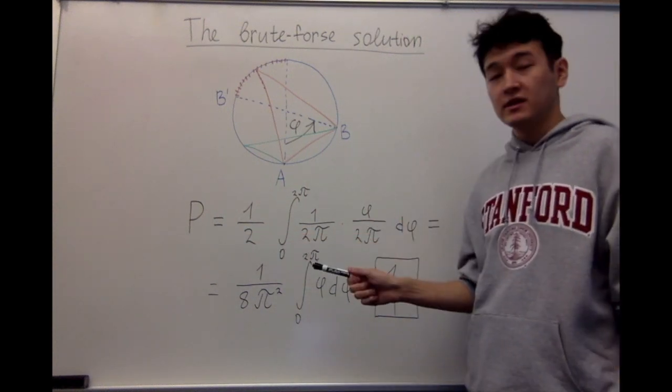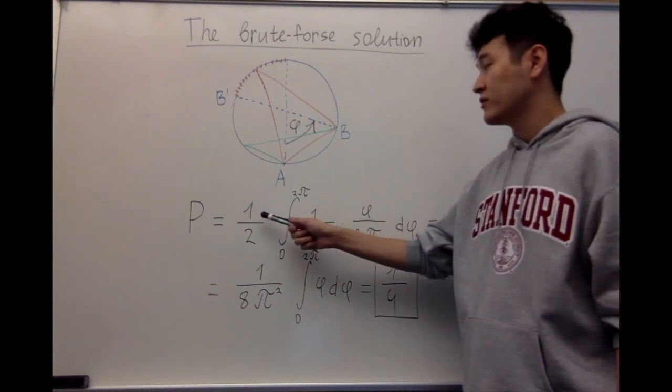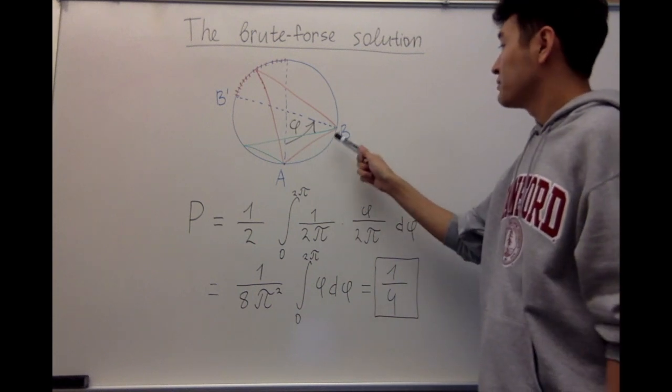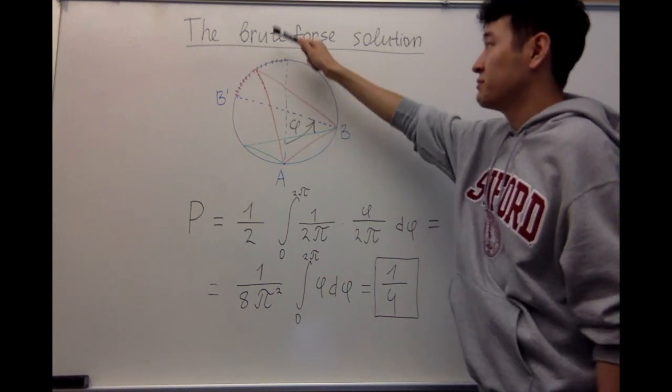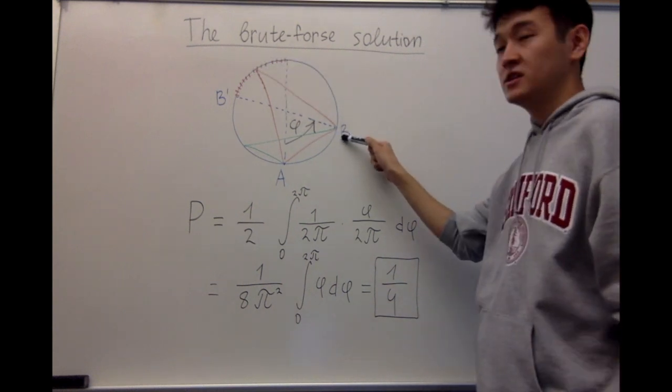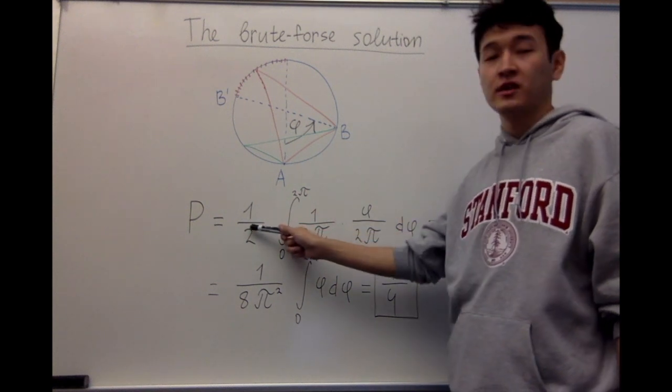Let me explain each factor of this expression. We have a factor of 1/2 because cases when B is here and the third point is there, and the opposite case when B is there and the third point is here, are counted twice. That's why we divide by 2.